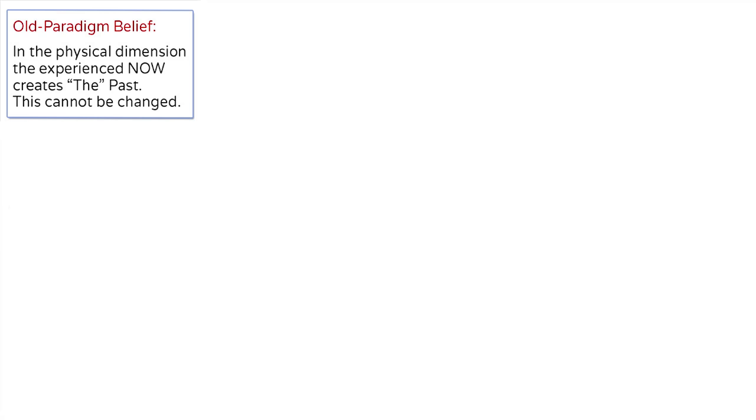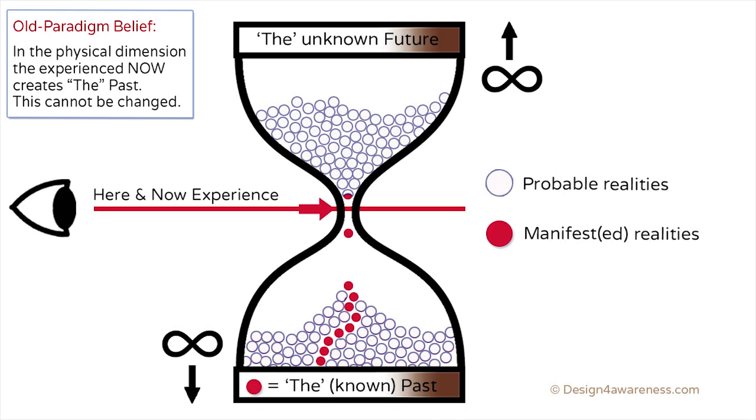You could say that the still frames of reality that we shift through are each one Planck length. We see billions of still frames shifting seamlessly one into another, creating the picture of the here-and-now moment as we perceive it. In the physical dimension, the experienced now creates the past. This cannot be changed. This is what we're being taught to be true. It's really a collective decision. The little red dots create a specific path through the known past. It's the past that you walked, and that's it.